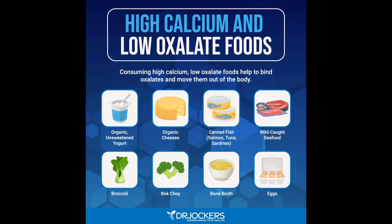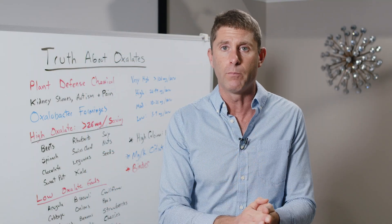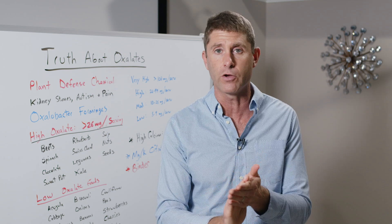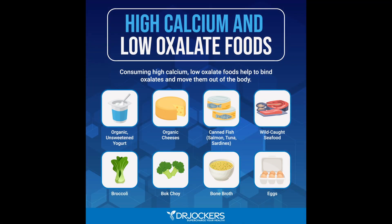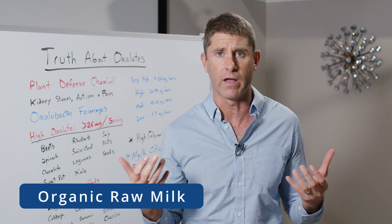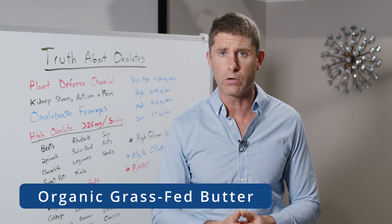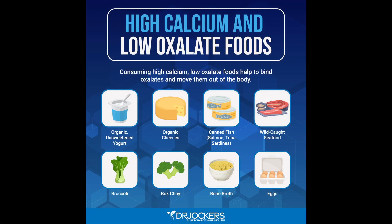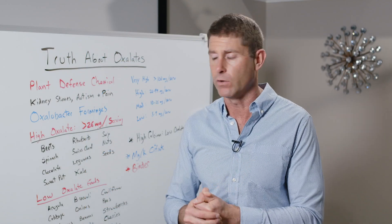Foods that are low oxalate but high in calcium are also helpful — calcium itself binds to oxalates. That includes organic unsweetened Greek yogurt, which is a great protein source, high in calcium and magnesium, and has probiotics and enzymes to support the gut microbiome. Broccoli and bok choy are higher in calcium and lower in oxalates. Organic raw milk, grass-fed butter, eggs, egg yolk, fish — particularly fish with bones — and bone broth are all high in calcium and low oxalate.